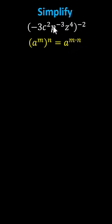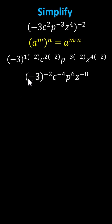This indicates we multiply all the exponents inside the parentheses by the exponent of negative 2 outside the parentheses. And remember, the exponent on negative 3 is positive 1. Now multiplying the exponents, we have negative 3 to the power of negative 2, c to the power of negative 4, p to the power of positive 6, and z to the power of negative 8.